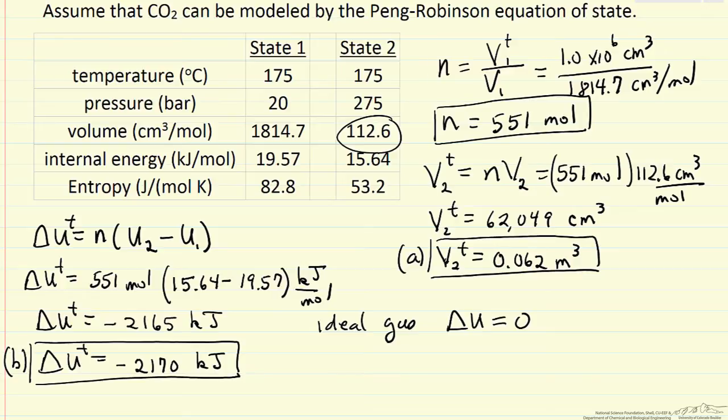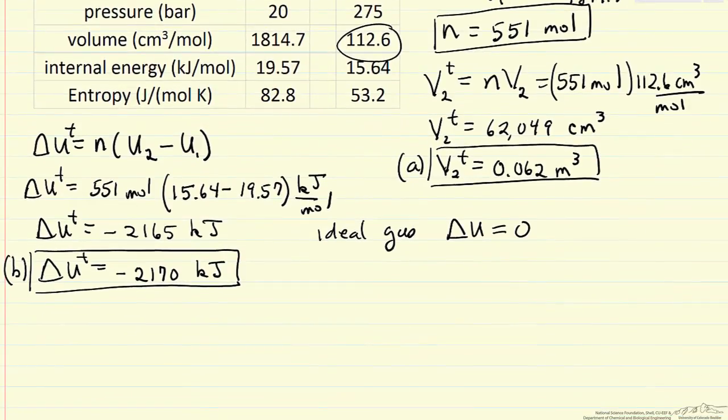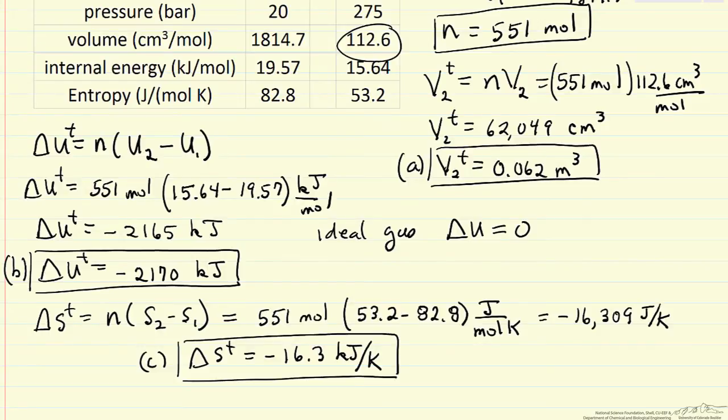Next we want to calculate the entropy change, so we'll do the same type calculation. The total entropy change is the number of moles times s2 minus s1. These are state functions, so we just need initial and final conditions, independent of the path. I've reduced the number of significant figures and converted from joules to kilojoules. The entropy is decreasing. We kept it isothermal, but we've decreased the volume and increased the pressure, so that should result in a decrease in entropy.